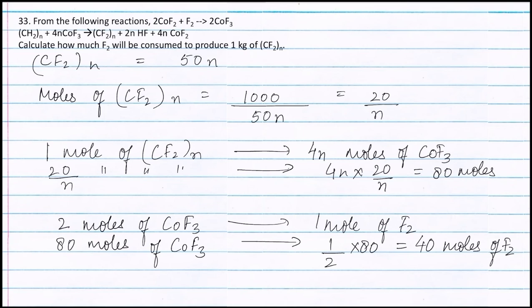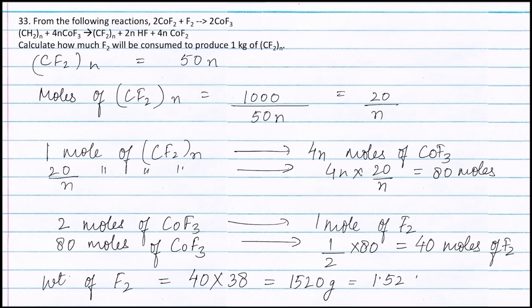Therefore, weight of fluorine = moles of fluorine × molecular weight of fluorine = 40 moles × 38 grams = 1520 grams, or 1.52 kg. Therefore, the weight of fluorine required to produce 1 kg of (CF₂)ₙ is equal to 1.52 kg.